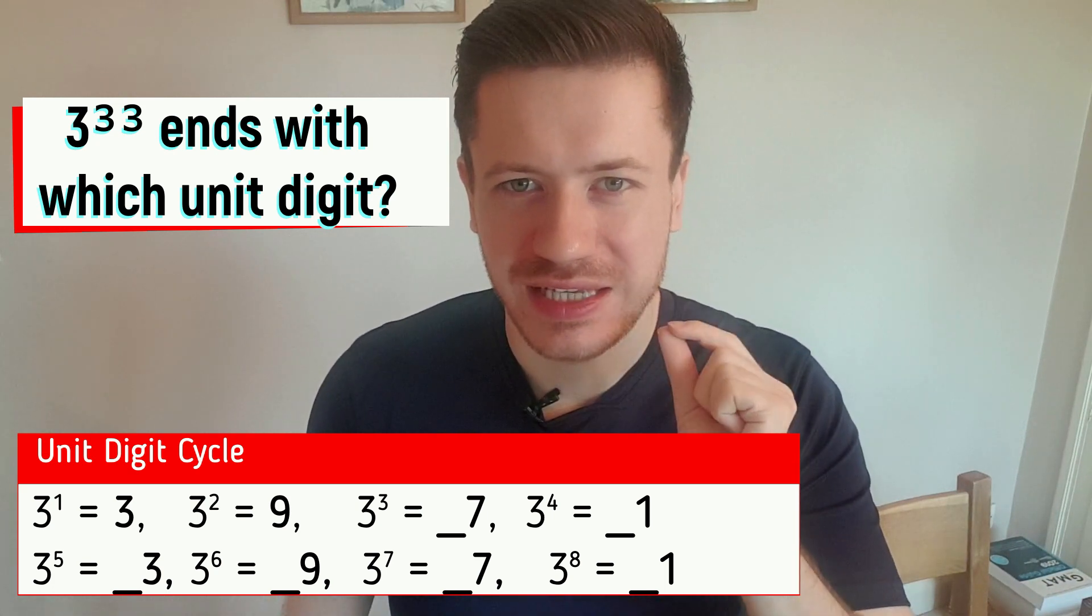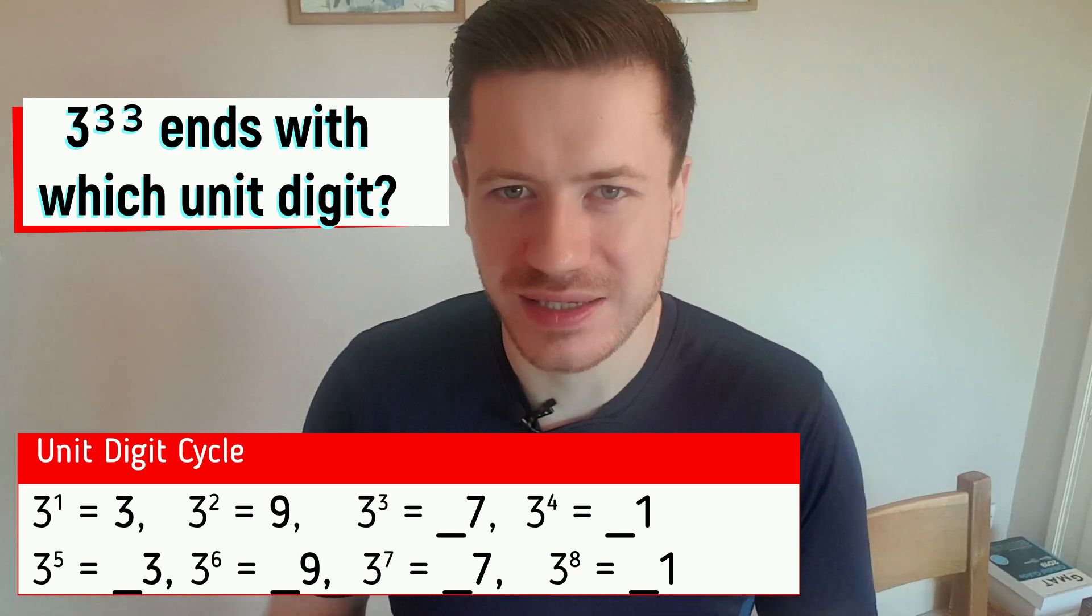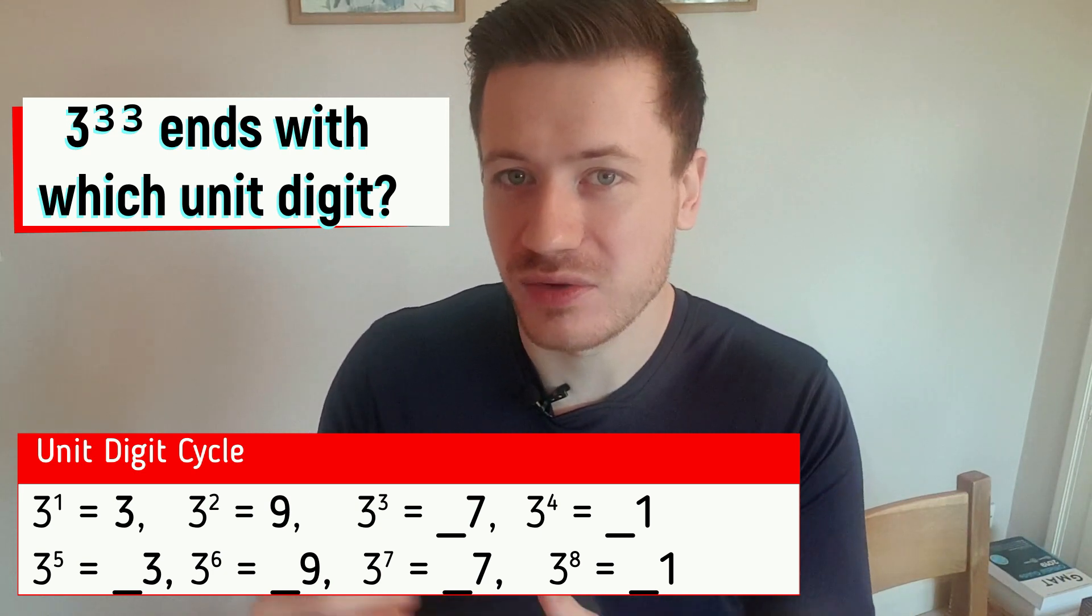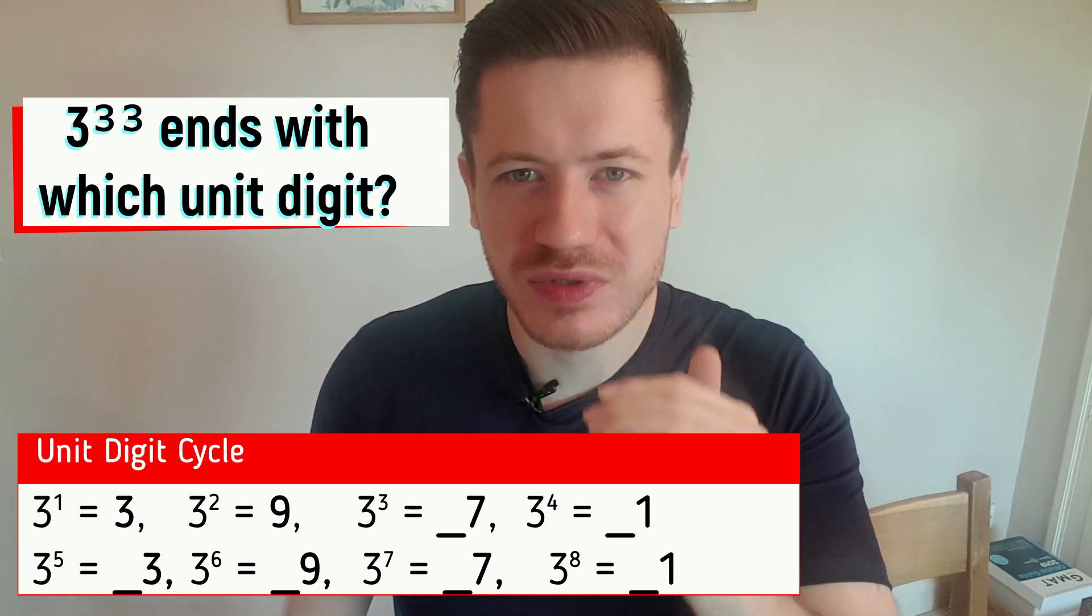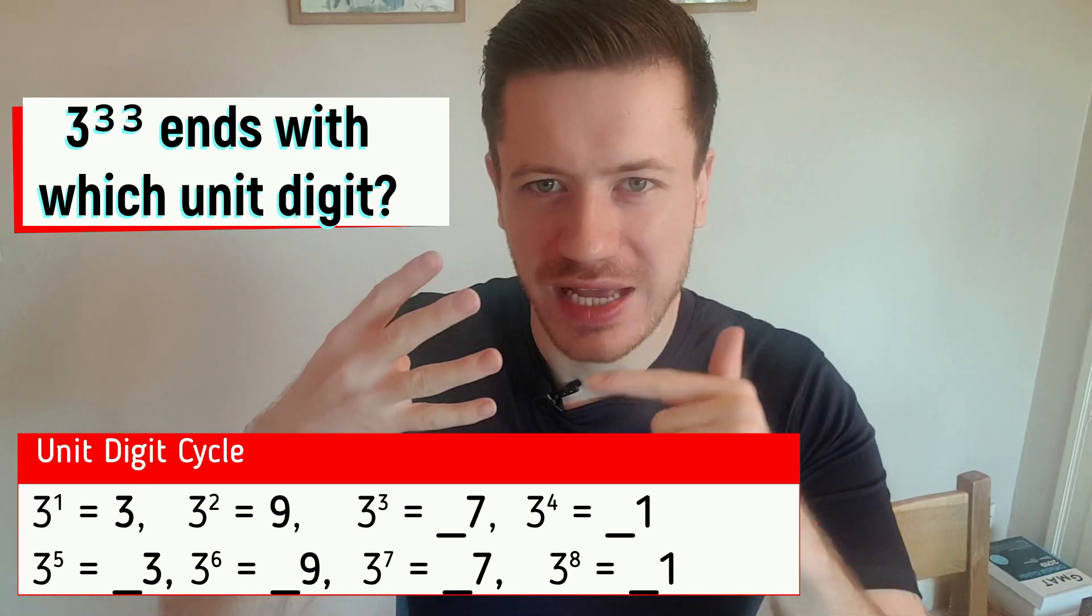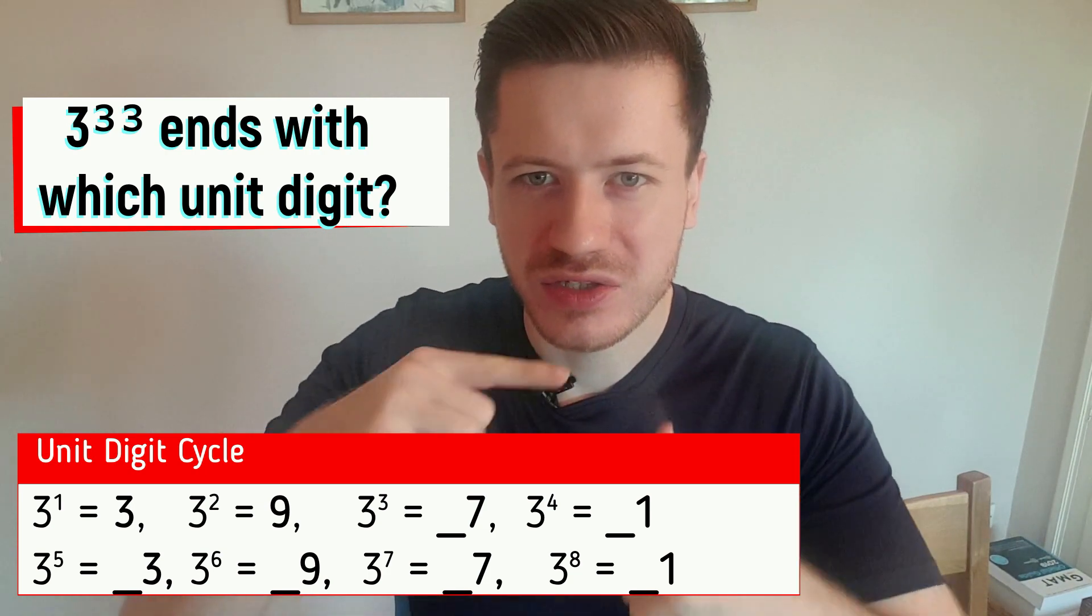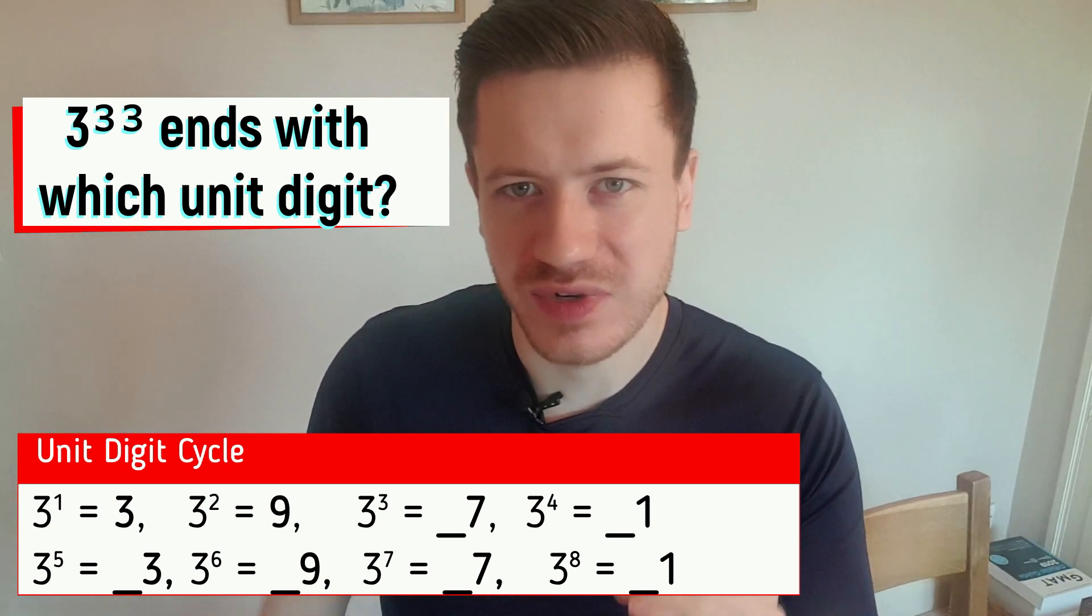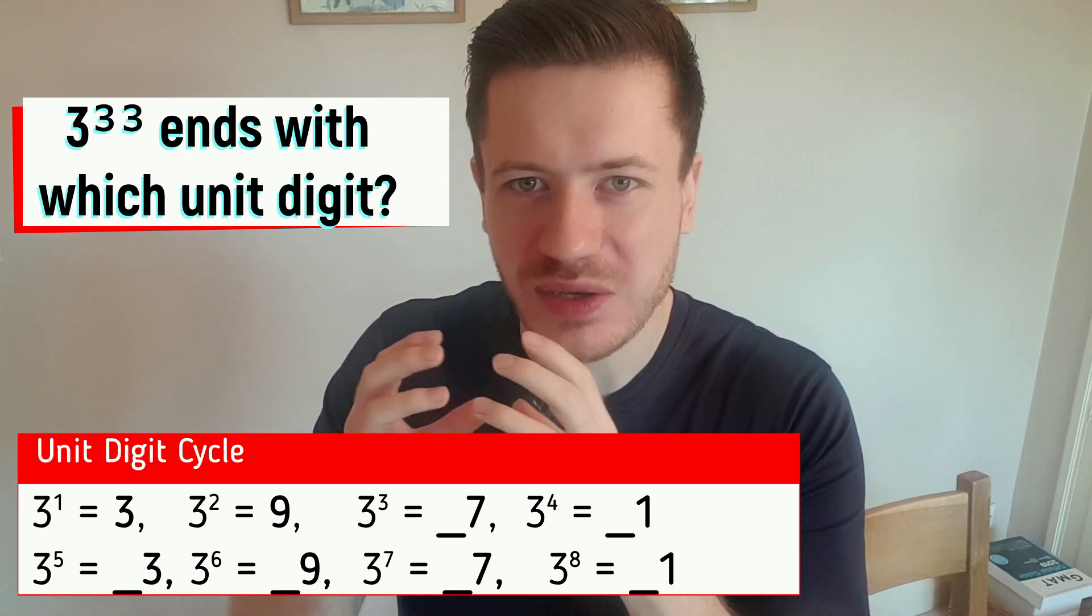Now our challenge is to find out what three to the power of 33 ends in. Some students might want to do this with their fingers and just count up to 33. And that's fine. It just takes quite a long time. What I recommend is noticing that all the multiples of four end in a one. So we can use that to go all the way up to the nearest multiple of four to three to the power of 33, which is three to the power of 32. And that's going to end in a one.